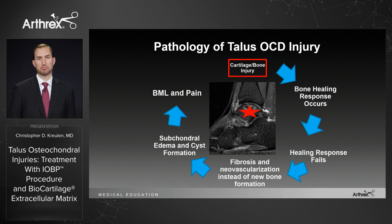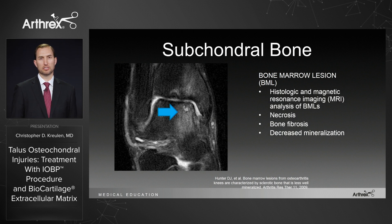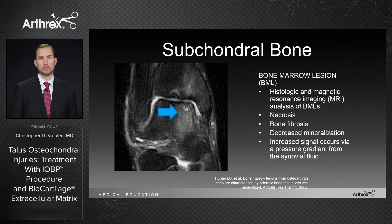A patient then presents in clinic with pain, you get an MRI and it shows a bone marrow lesion. If we look closer at the subchondral bone and a bone marrow lesion, histology shows necrosis, bone fibrosis, and decreased mineralization. The MRI shows increased signal, and this most likely is due to a change in the pressure gradient from the synovial fluid invading the bone.